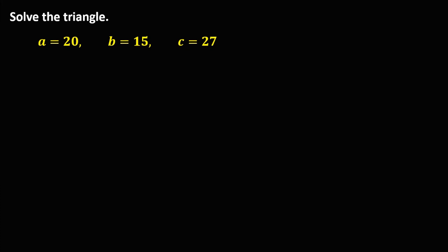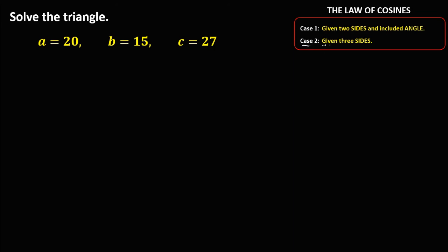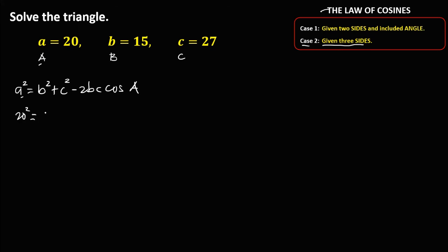For the next given, since three sides of an oblique triangle are given, this satisfies Case 2. We'll use the law of cosines to solve for angles A, B, and C. To solve for angle A, we use the formula: A squared equals B squared plus C squared minus 2BC times cosine angle A.